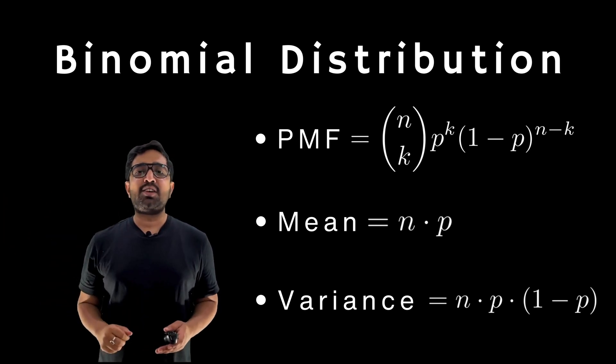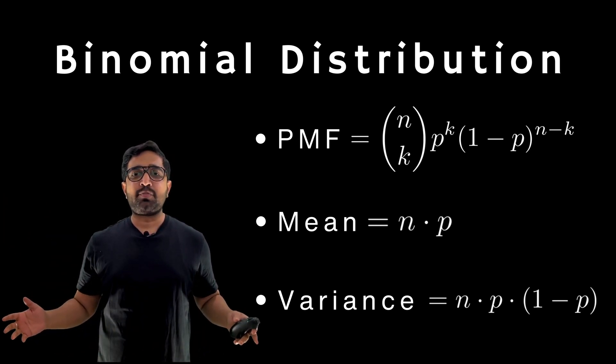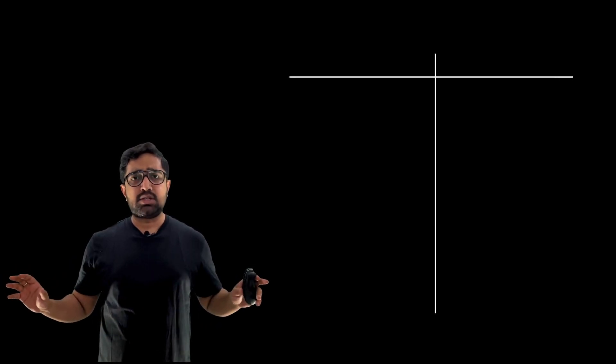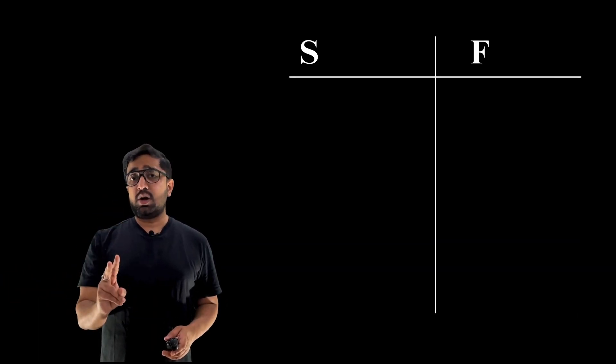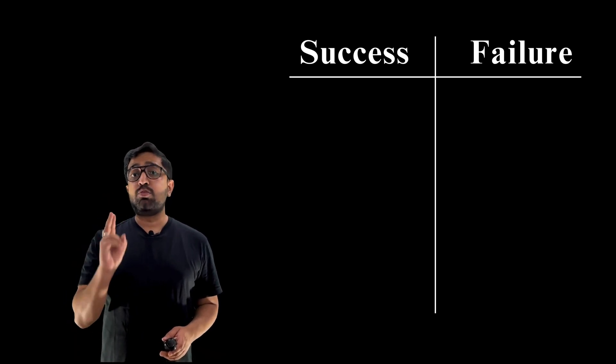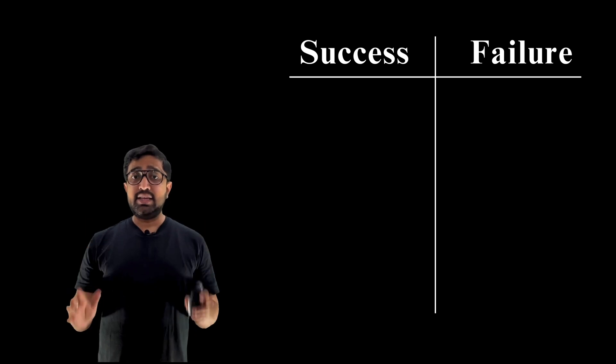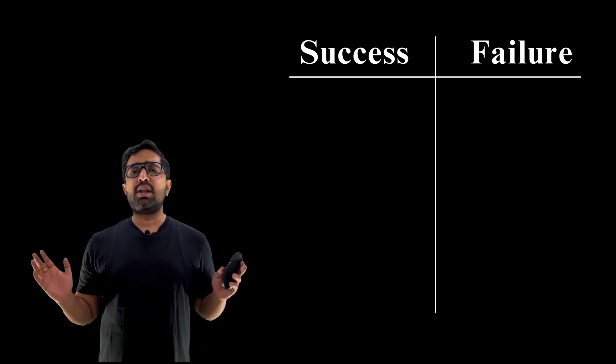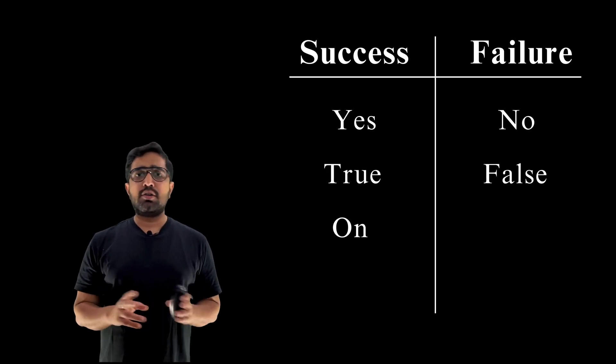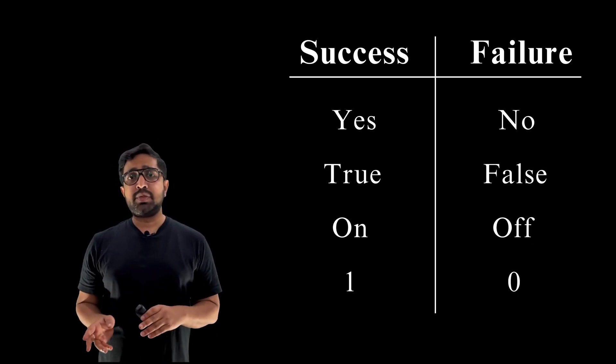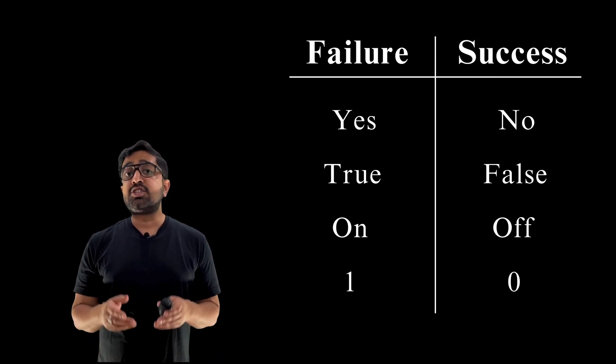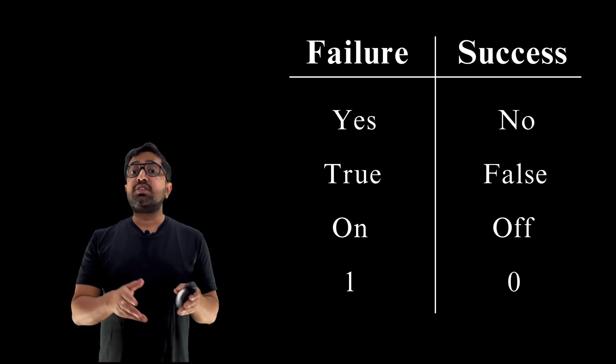Binomial distribution applies to experiments with exactly two possible outcomes, no more, no less. These outcomes can be framed in many ways: yes or no, true or false, on and off, one or zero. You decide which one is success and which is failure based on different scenarios.